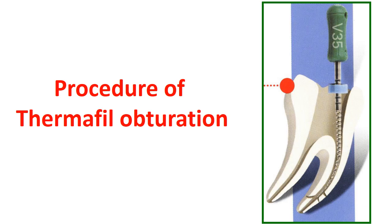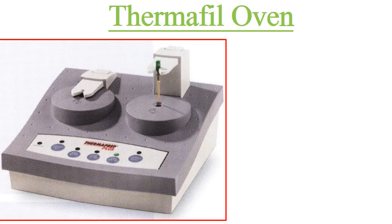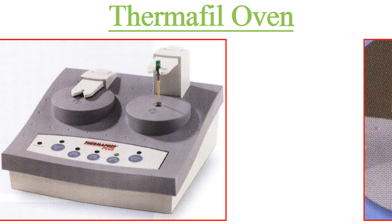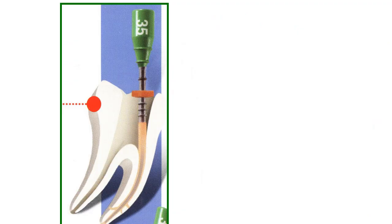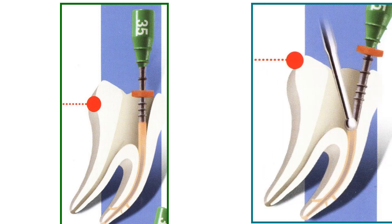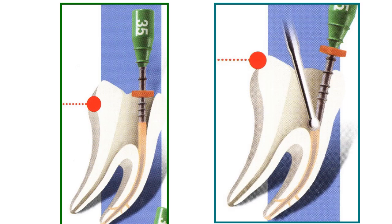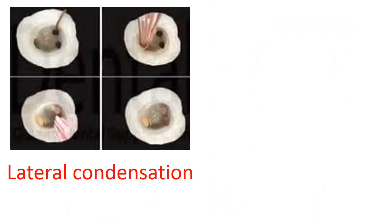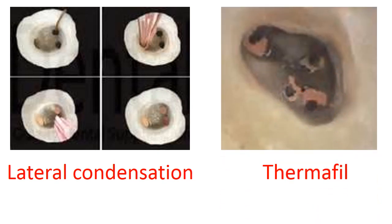The procedure of thermal obturation involves verifying the master cone size, drying the canal, then placing the appropriate cone inside the oven. The lateral condensation technique has many steps and many cones needed, but when using Thermafil, we need only a single cone.